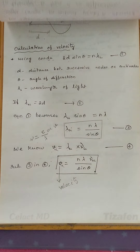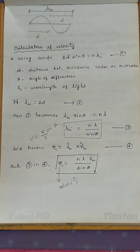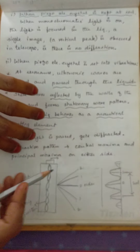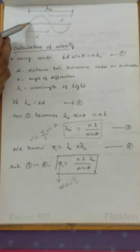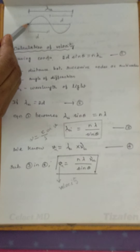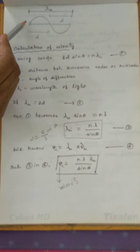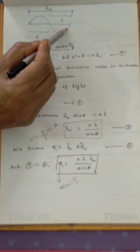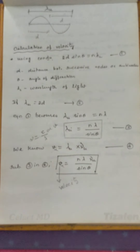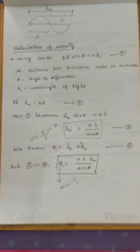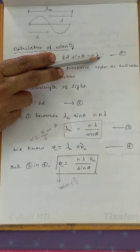The diffraction pattern is produced. Now let us see how the velocity can be calculated. When considering a standing wave pattern, the distance between two nodes or between two antinodes is taken as d. The condition for diffraction grating is: 2d sinθ = nλ, where λ here is the wavelength of light used, d is the distance between successive nodes or successive antinodes, θ is the angle of diffraction, and λ_l is the wavelength of light used.